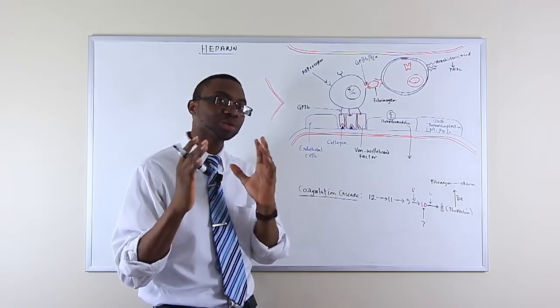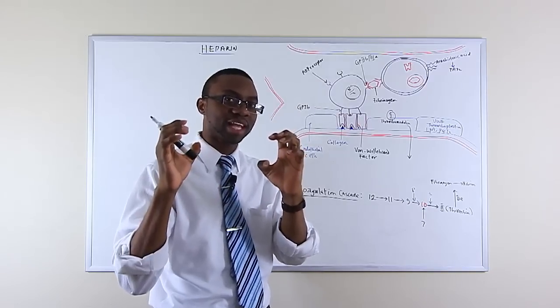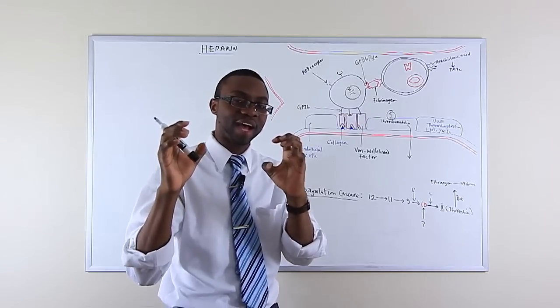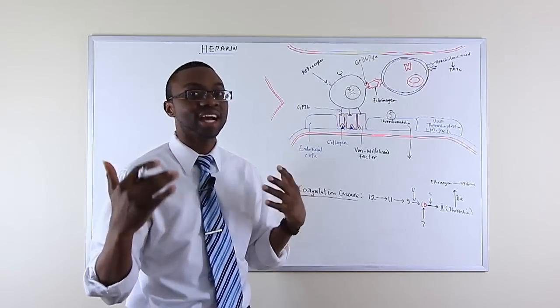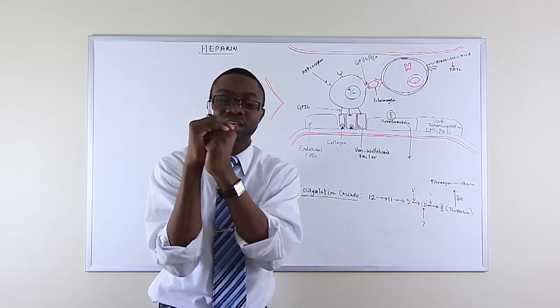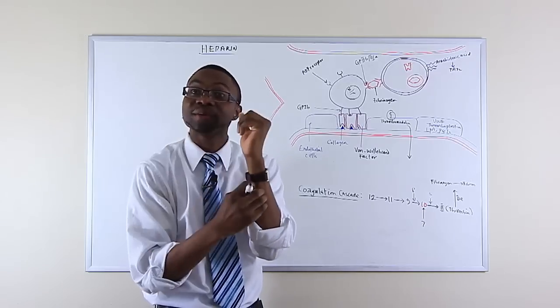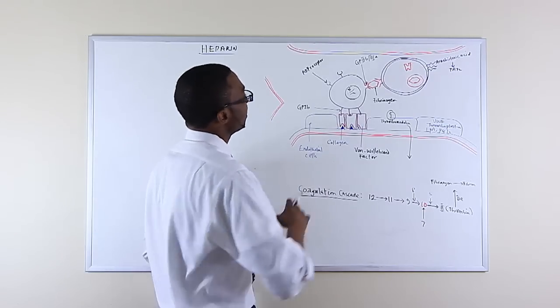Remember those two things: platelets and coagulation factors to make fibrin — that is our end goal. We make a nice ball of clot and prevent you from bleeding. That's how your body protects itself.